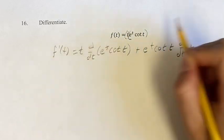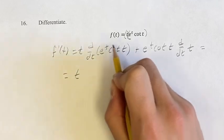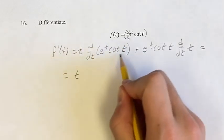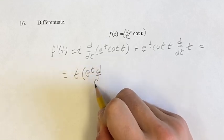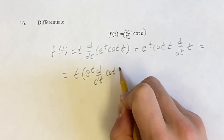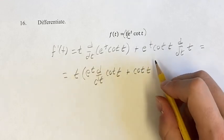These are going to be our two terms for the product rule the first time. This is going to equal t, and then we have to use the product rule the second time to get the derivative of this term. So we have e^t times the derivative of cot(t) plus cot(t) times the derivative of e^t.